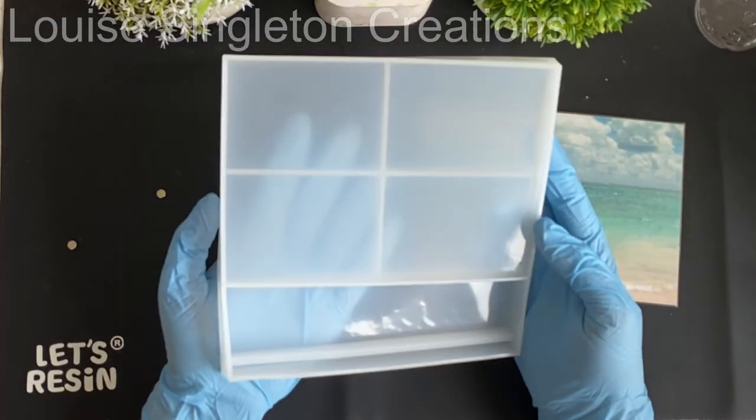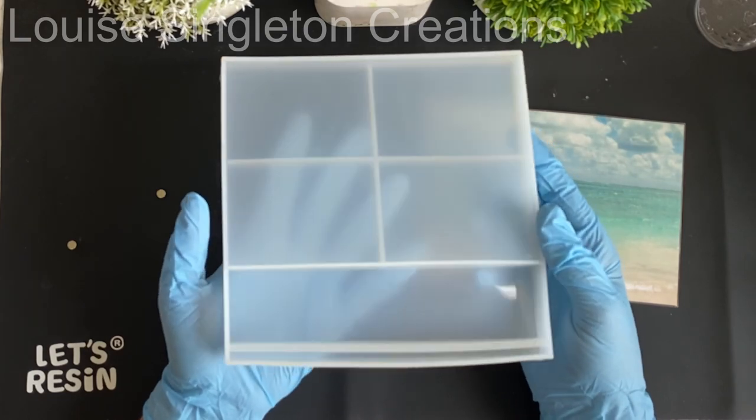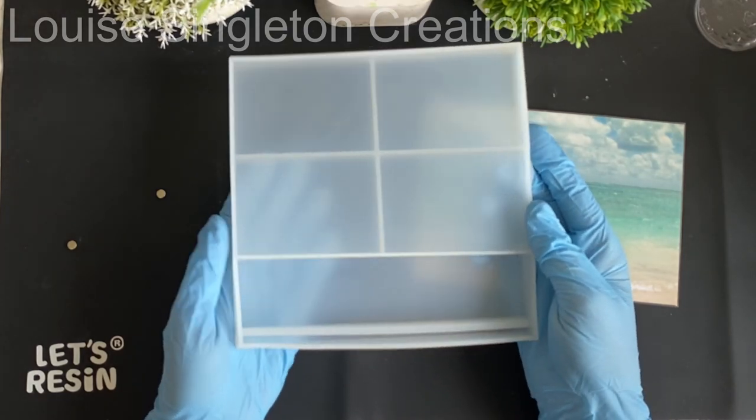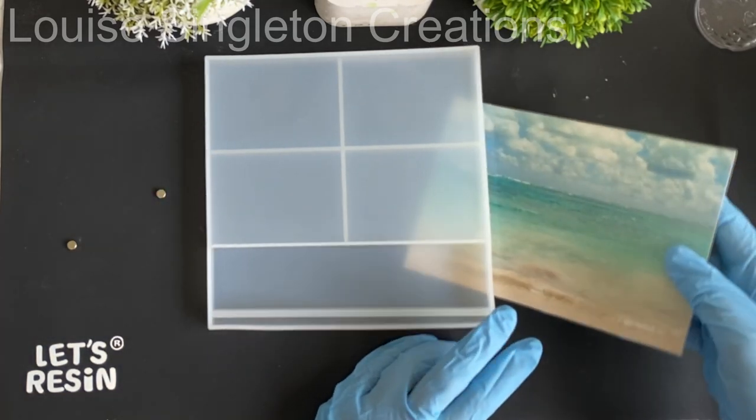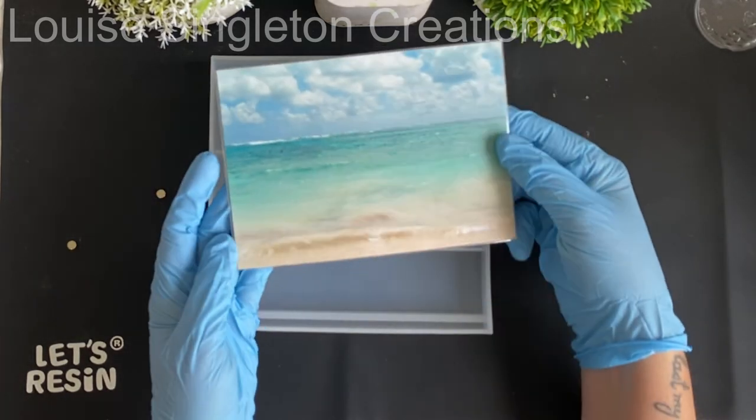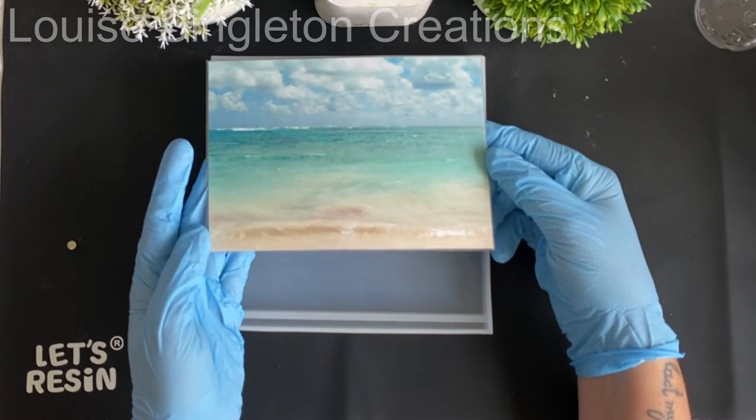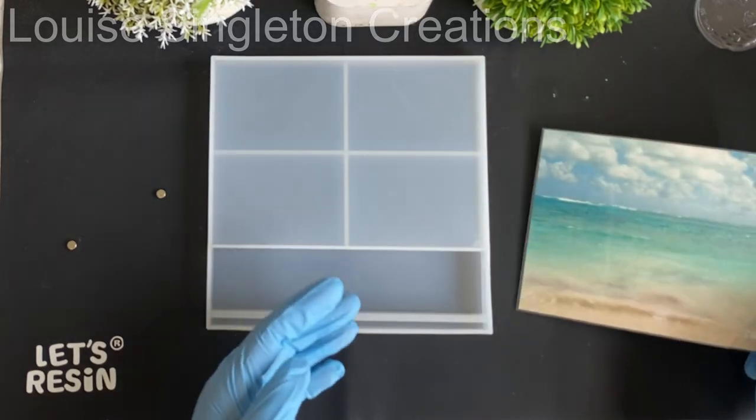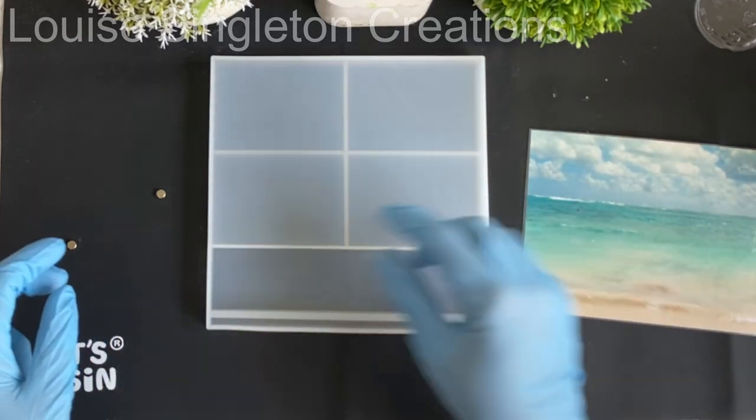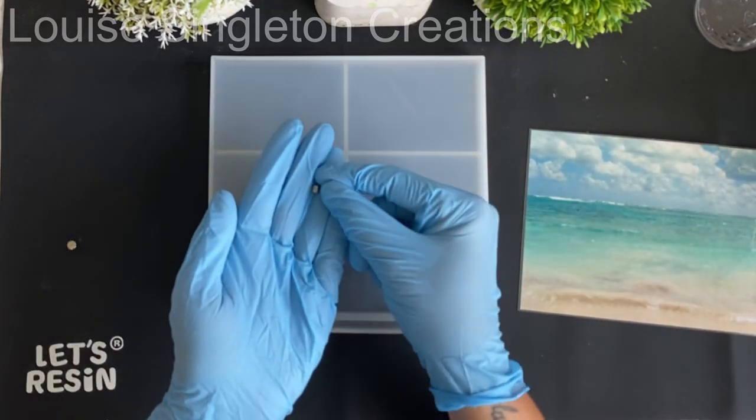So here is the mold from Let's Resin, nice and shiny and new because it's never been used. The top part is for the picture and the bottom part is to make the stand to mount the picture in. Here's the photograph all laminated. Do be sure when you laminate your photograph to leave a space around the edge when you trim it, otherwise the resin will seep in.